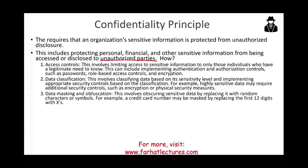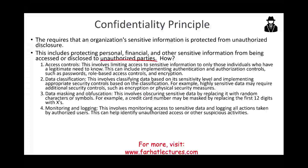Data masking and obfuscation involves securing sensitive data by replacing it with random characters or symbols. A good example is a credit card number displayed as X's — you are masking and obscuring the information so even if someone accesses it, they cannot read it. Monitoring and logging involves monitoring access to sensitive data and logging all actions taken by authorized users. All these principles are interrelated — from authenticating to authorizing to protecting data — they serve each other and can help identify unauthorized access or suspicious activities so you can audit the process if needed.